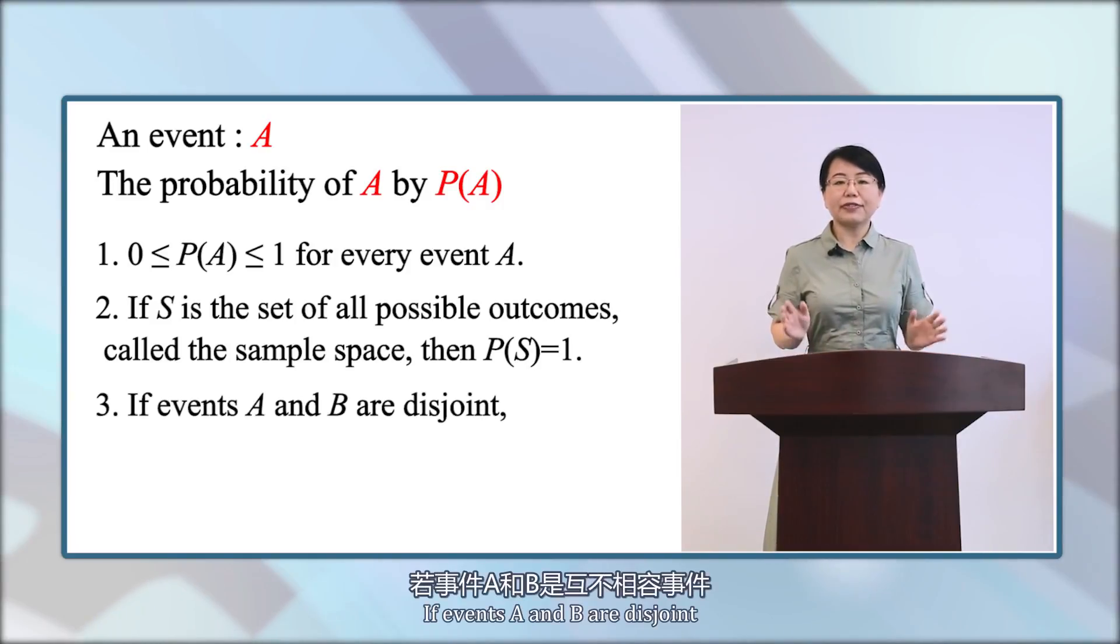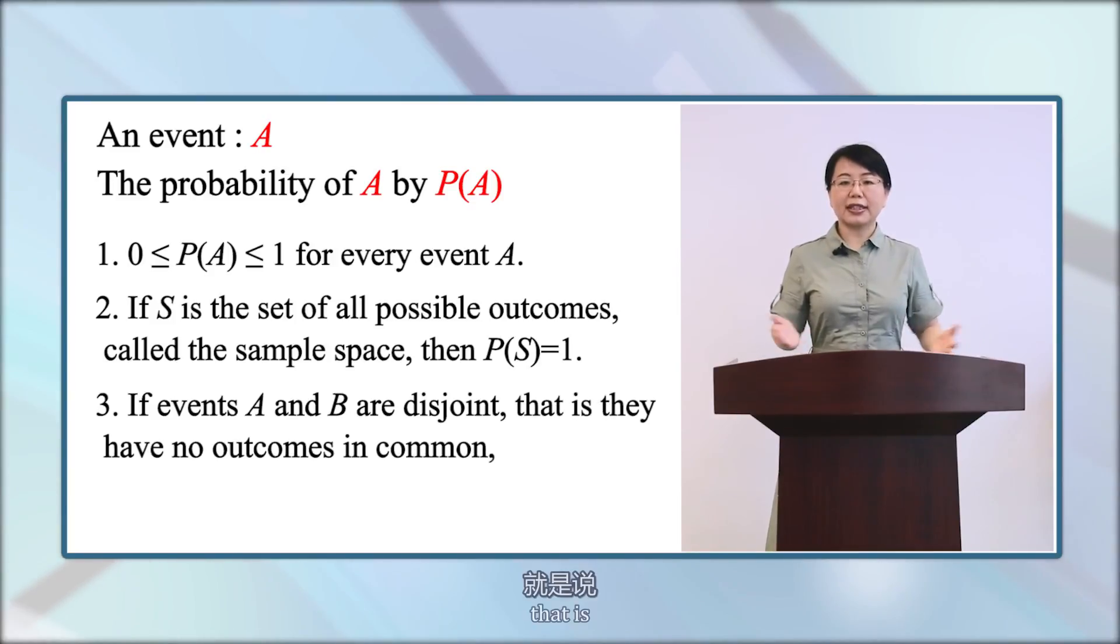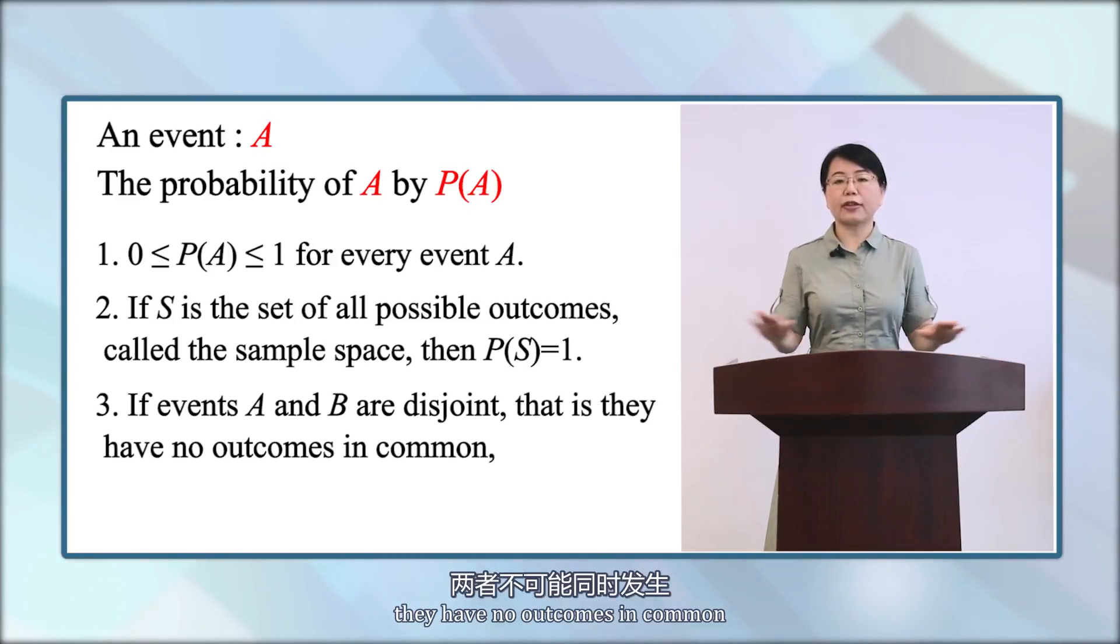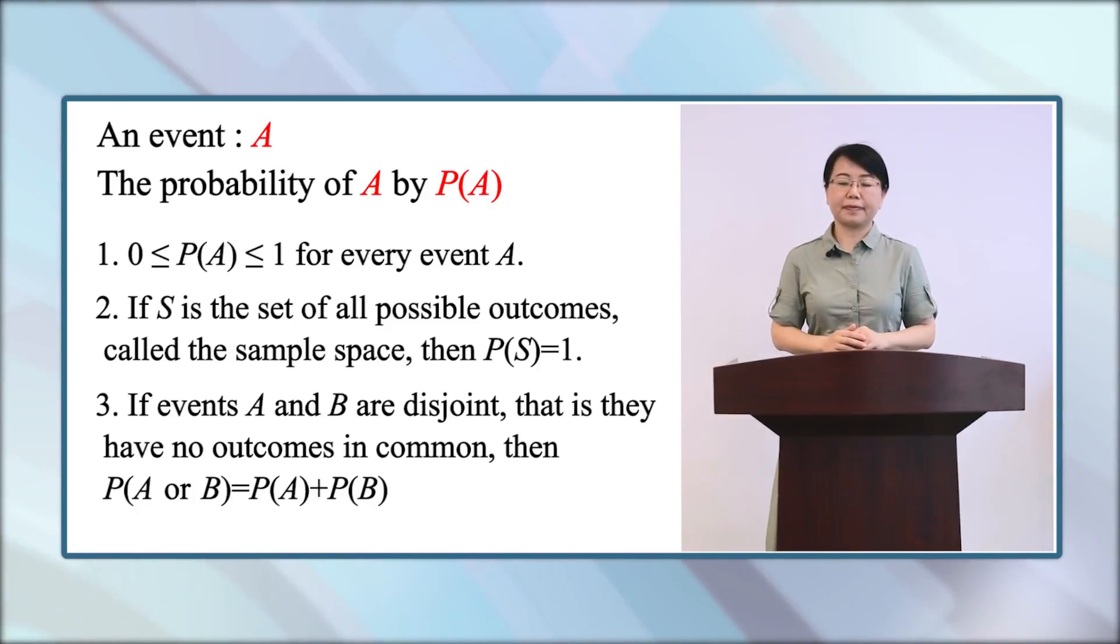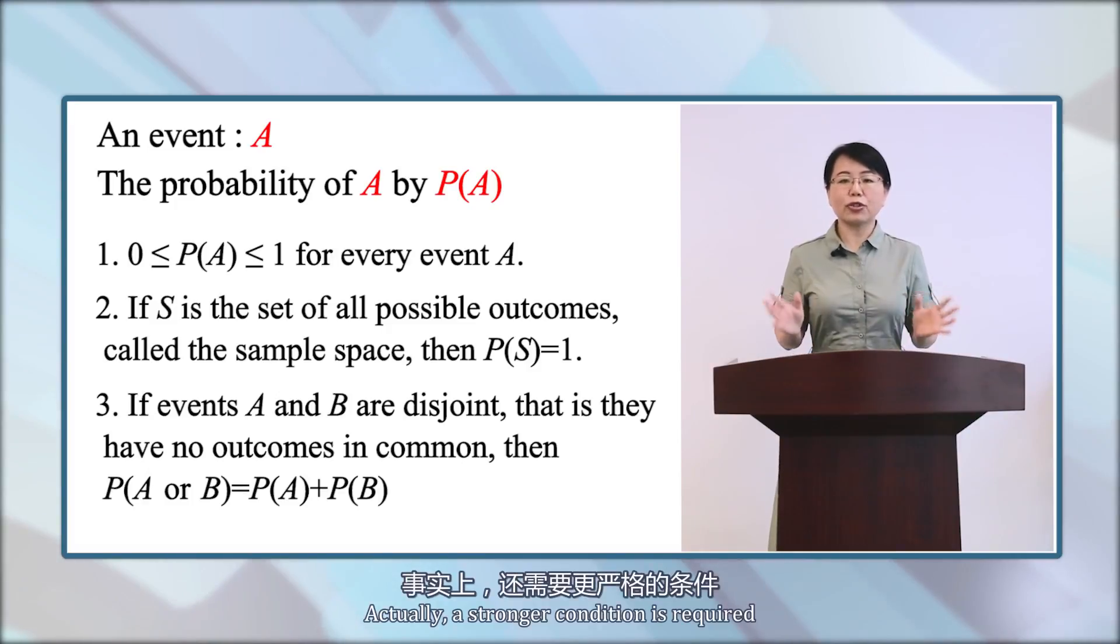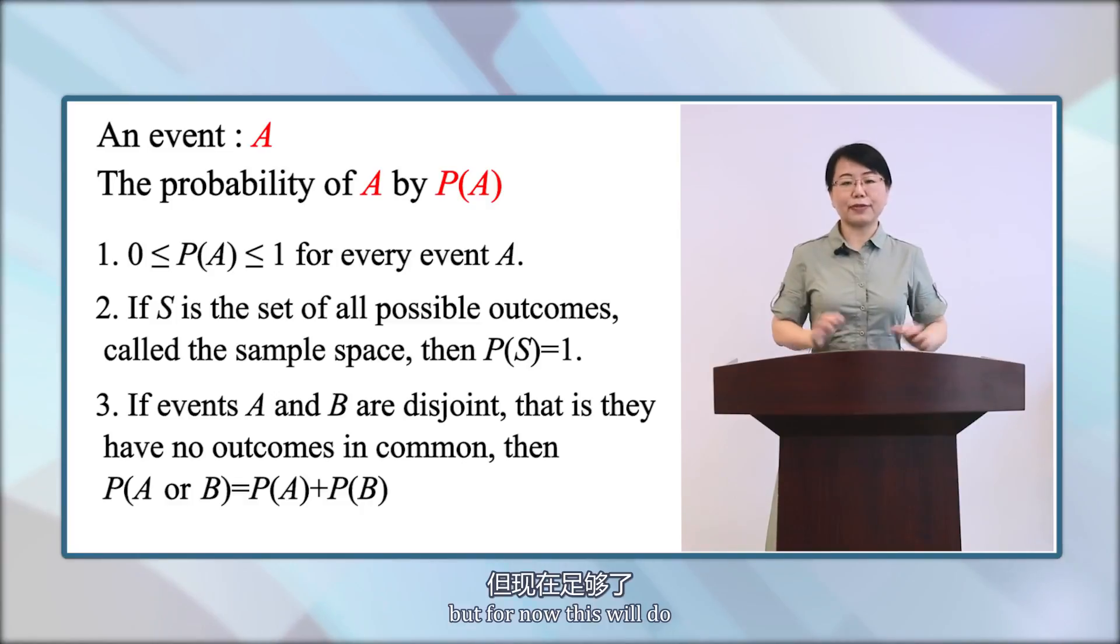Third, if A and B are disjoint, that is, they have no outcomes in common, then the probability of A or B is equal to the probability of A plus probability of B. Actually, a stronger condition is required, but for now that will do.